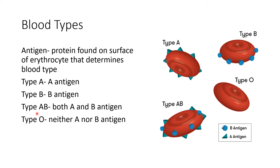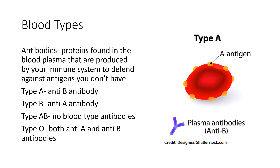If you have type AB blood, you have both of those different proteins on the surface of your red blood cell. And if you have type O blood, you have neither the A nor the B antigen on your red blood cells.